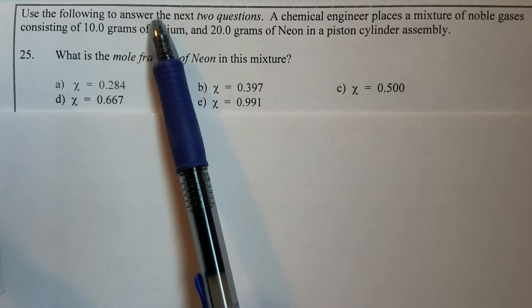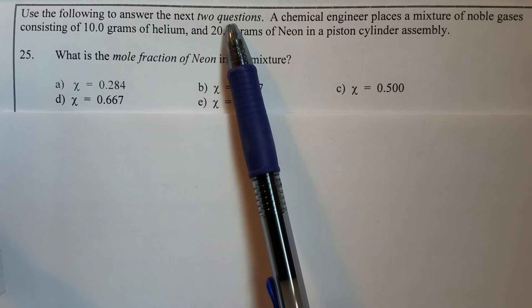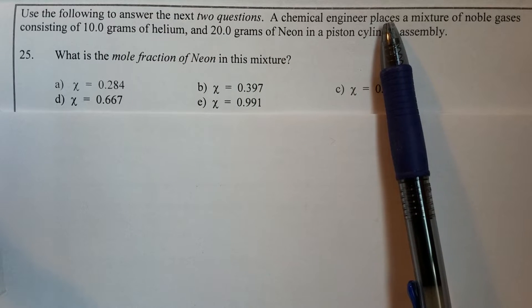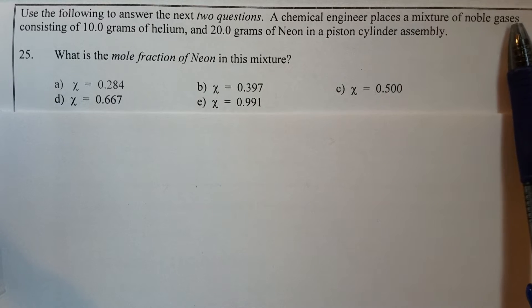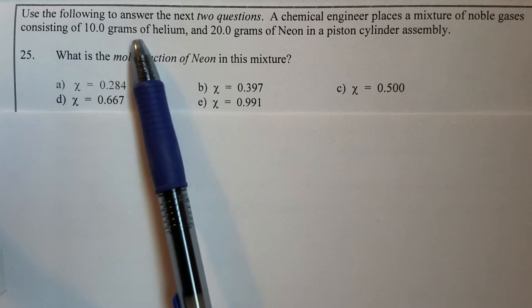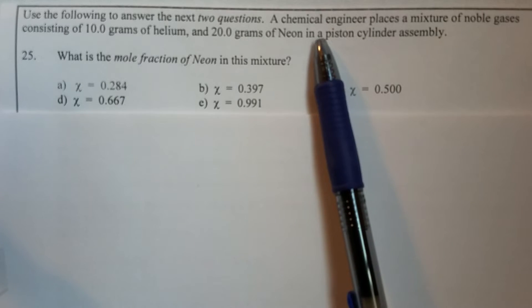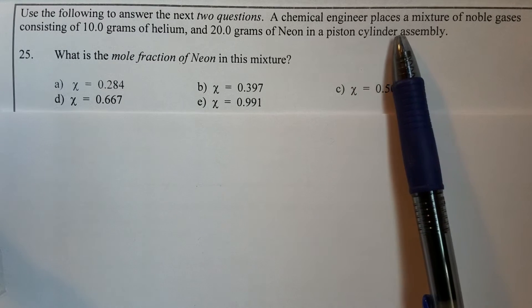Use the following to answer the next two questions. A chemical engineer places a mixture of noble gases consisting of 10 grams of helium and 20 grams of neon in a piston cylinder assembly.